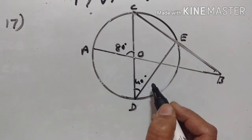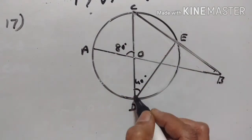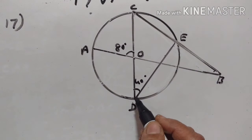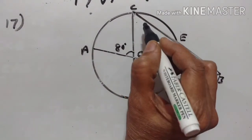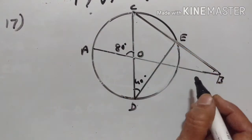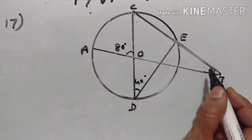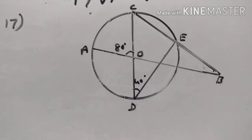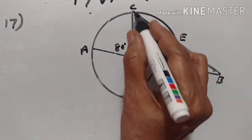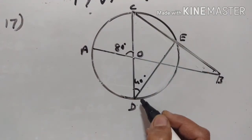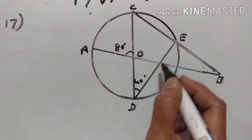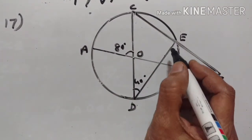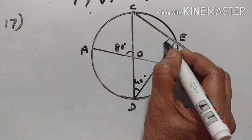Angle BDC is equal to 80 degrees and angle CDE is equal to 40 degrees. Find angle CAB, angle DCE, and angle ABC. CD is the diameter, therefore angle CED is the angle in the semicircle, so this is 90 degrees.